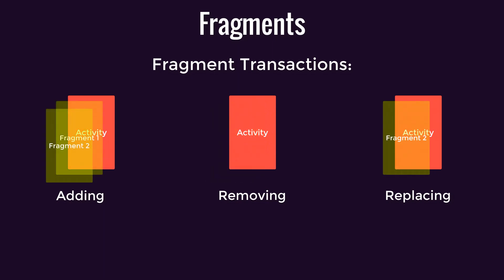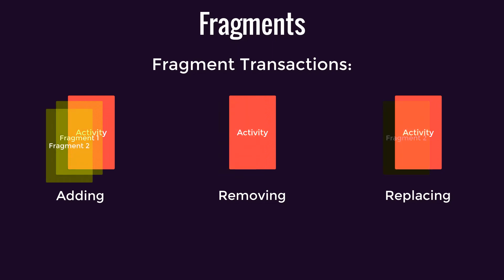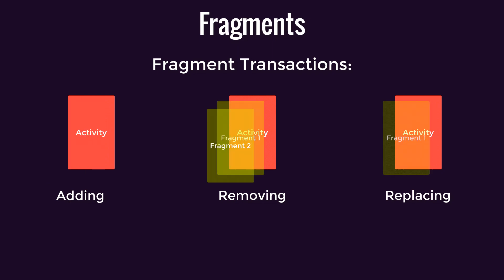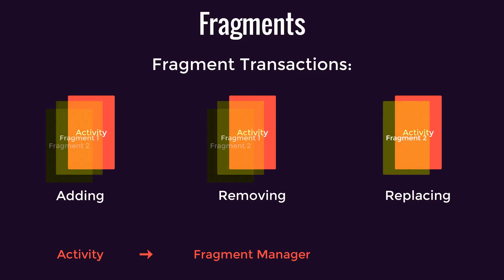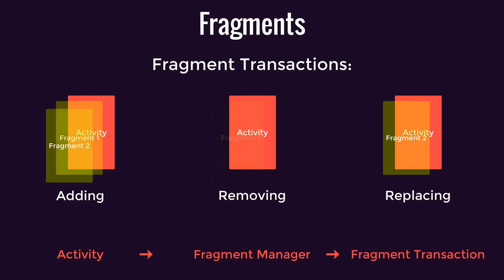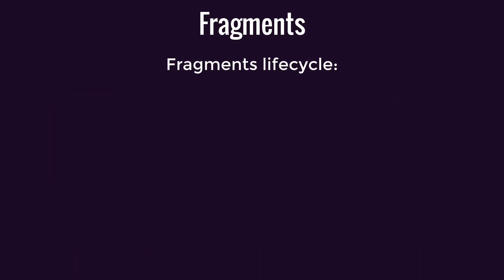With fragments you can do different things like adding, removing, or changing fragments in your app. These operations are called transactions, and the one in charge of managing and keeping track of them is called the Fragment Manager. Your activity talks to the Fragment Manager, and the Fragment Manager talks to the Fragment Transaction API to get those operations done. While this might seem complicated in theory, it's pretty easy to implement practically.